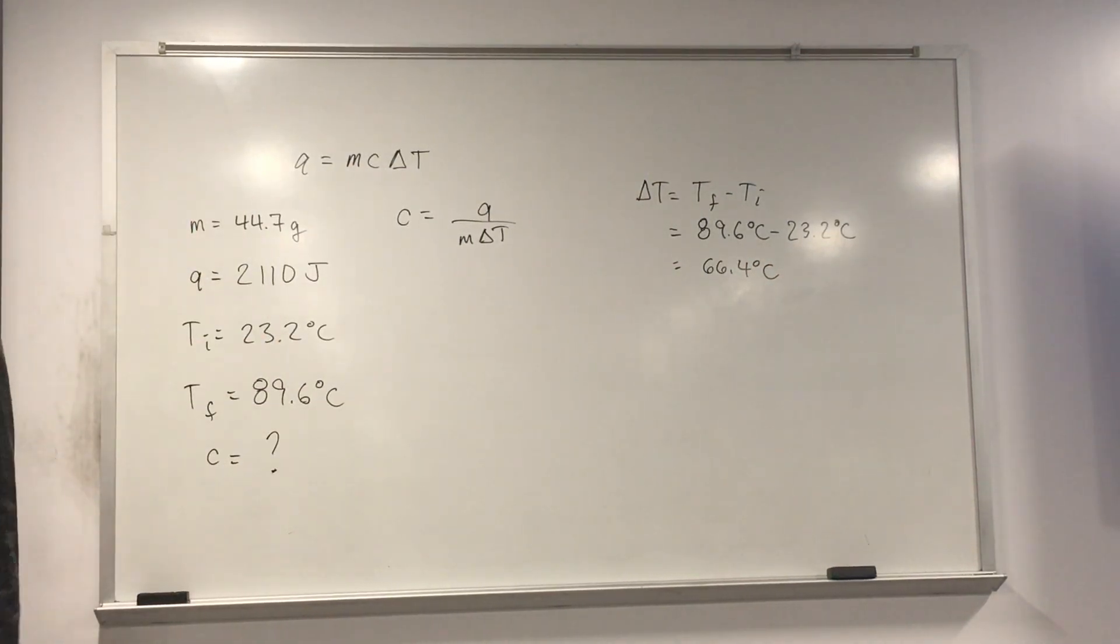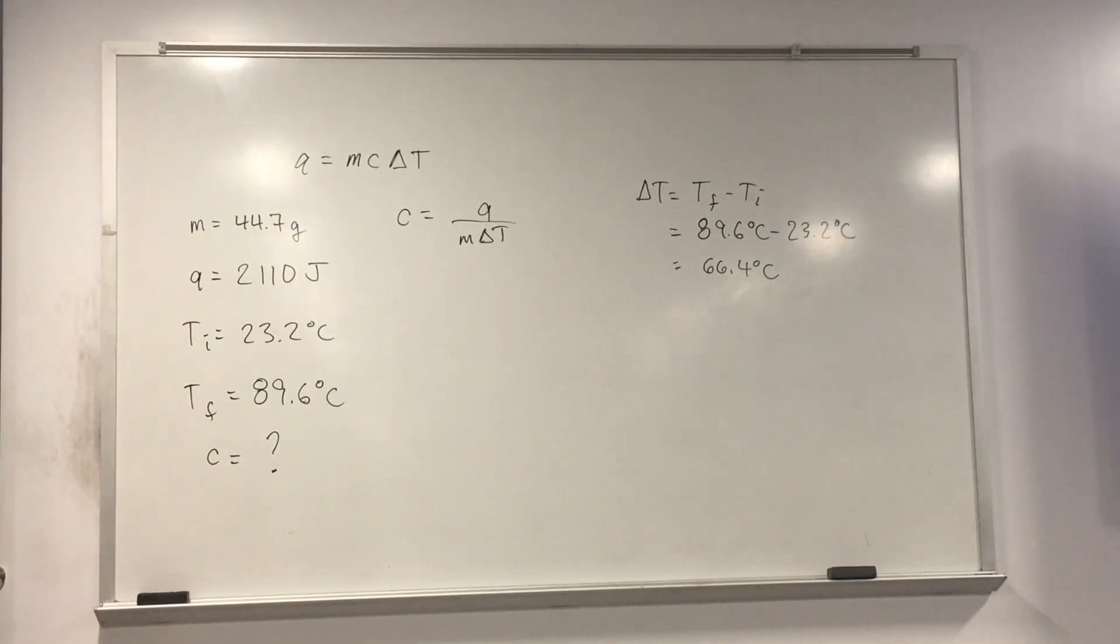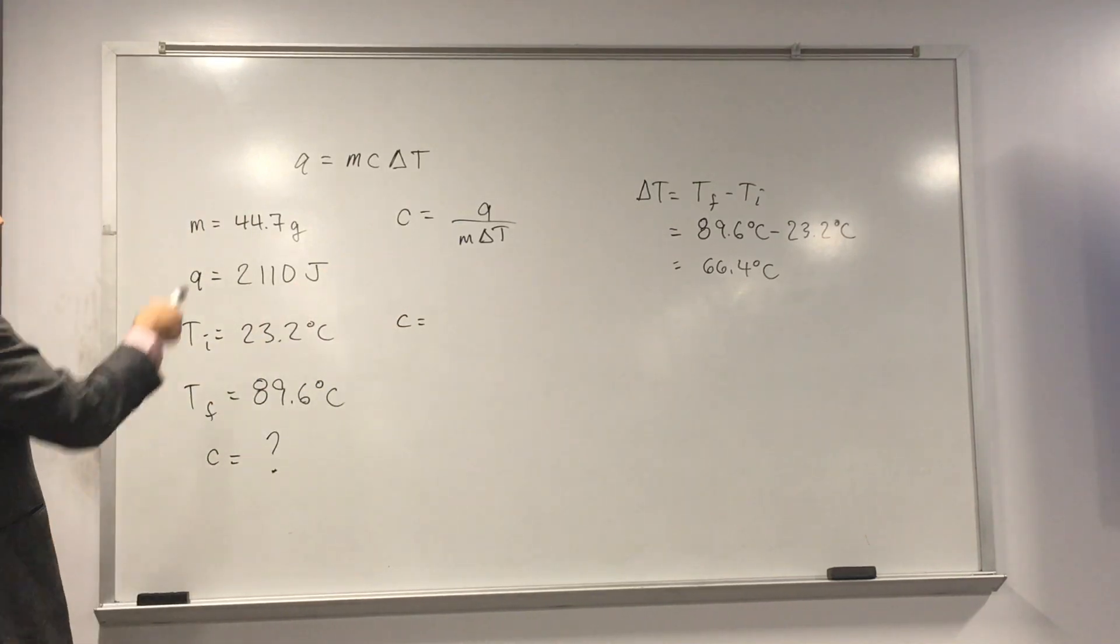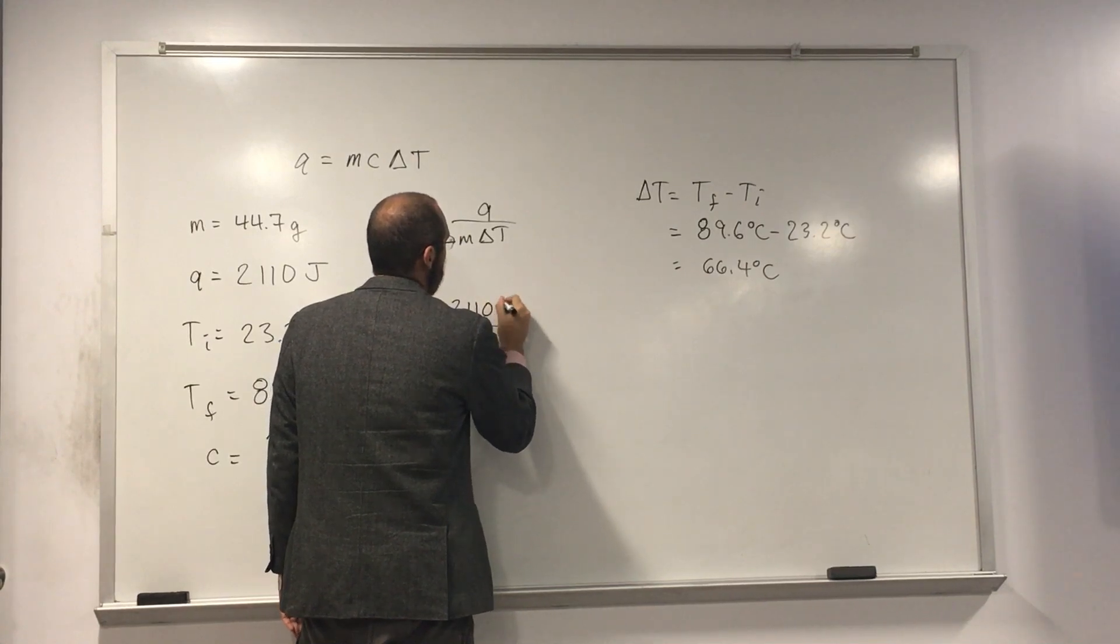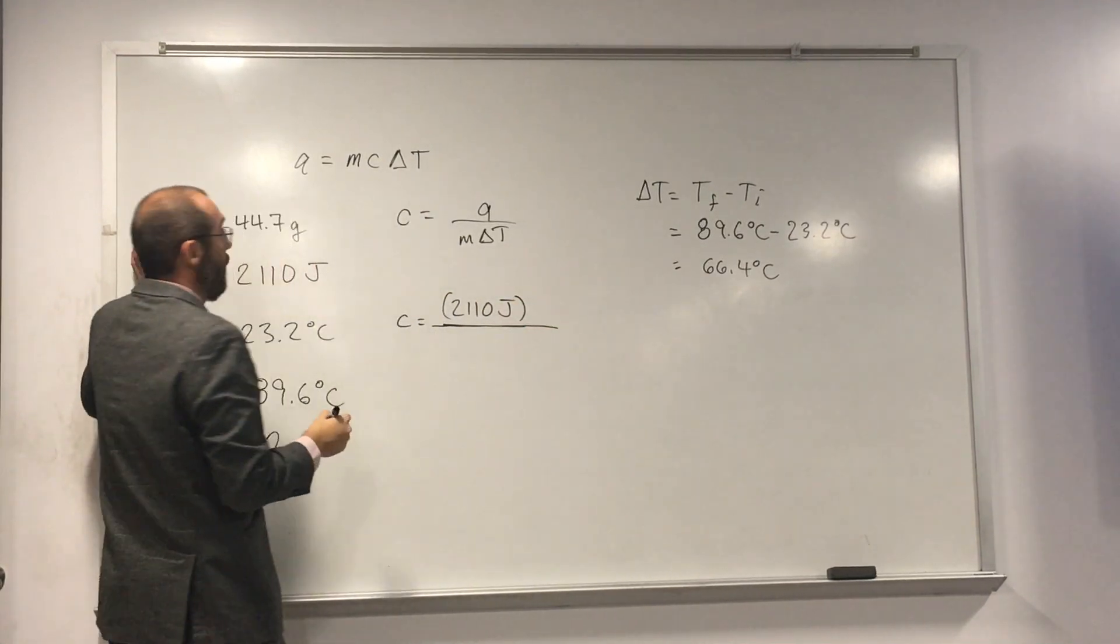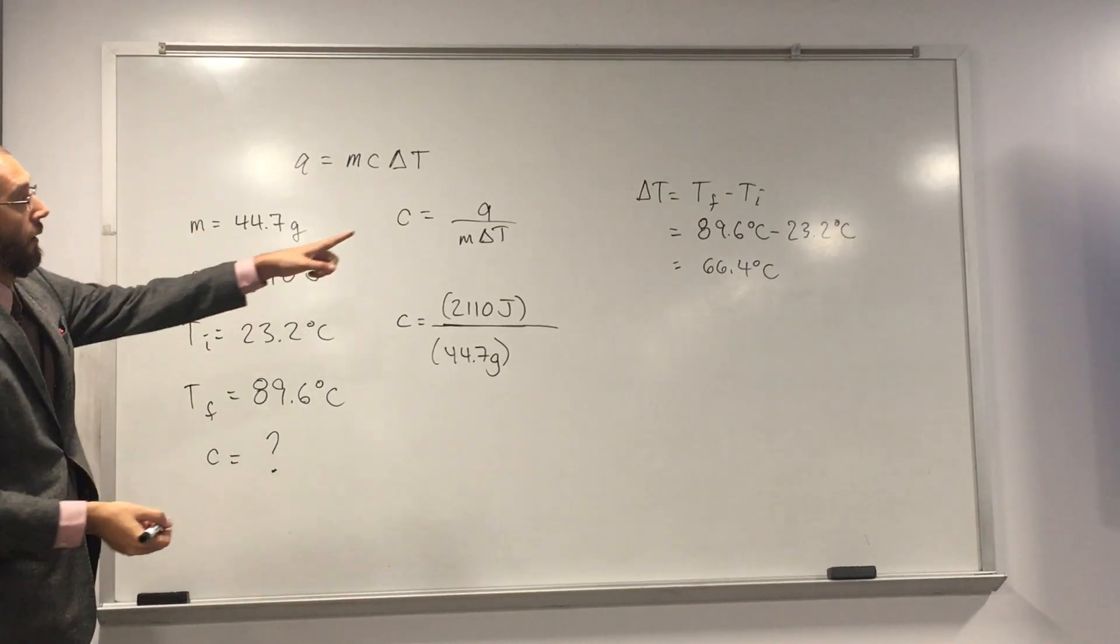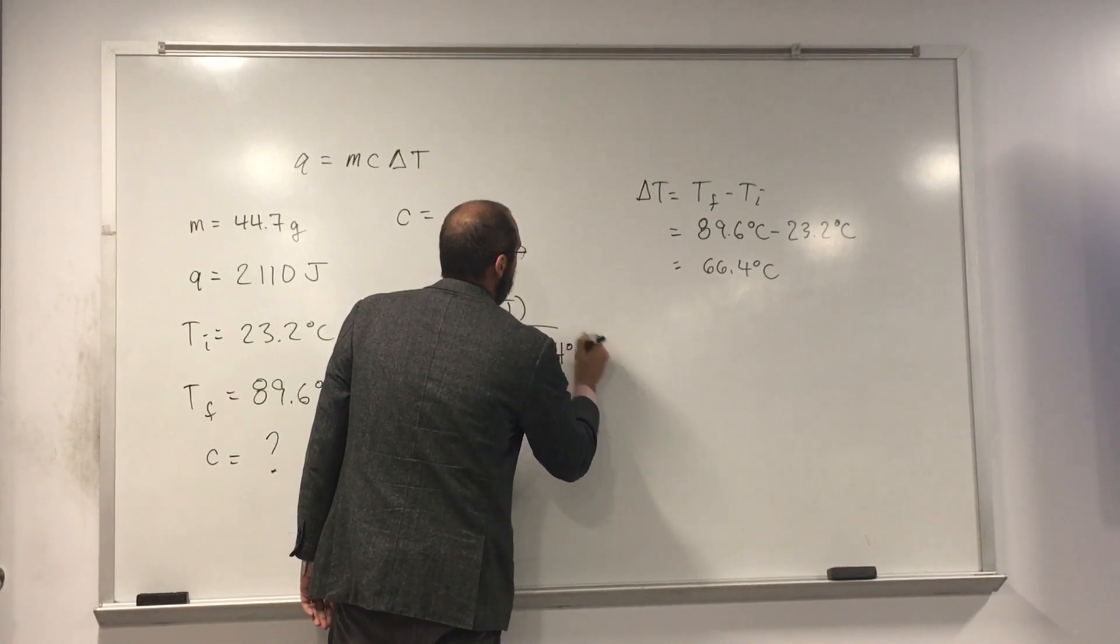So now, it's really kind of a plug and chug problem. Does everybody see that? Are we okay with that? So the way we want to do is just look for those numbers and plug them into the equation. So Q, 2110 joules. Mass? Yeah, 44.7 grams. And then delta T is 66.4 degrees Celsius.